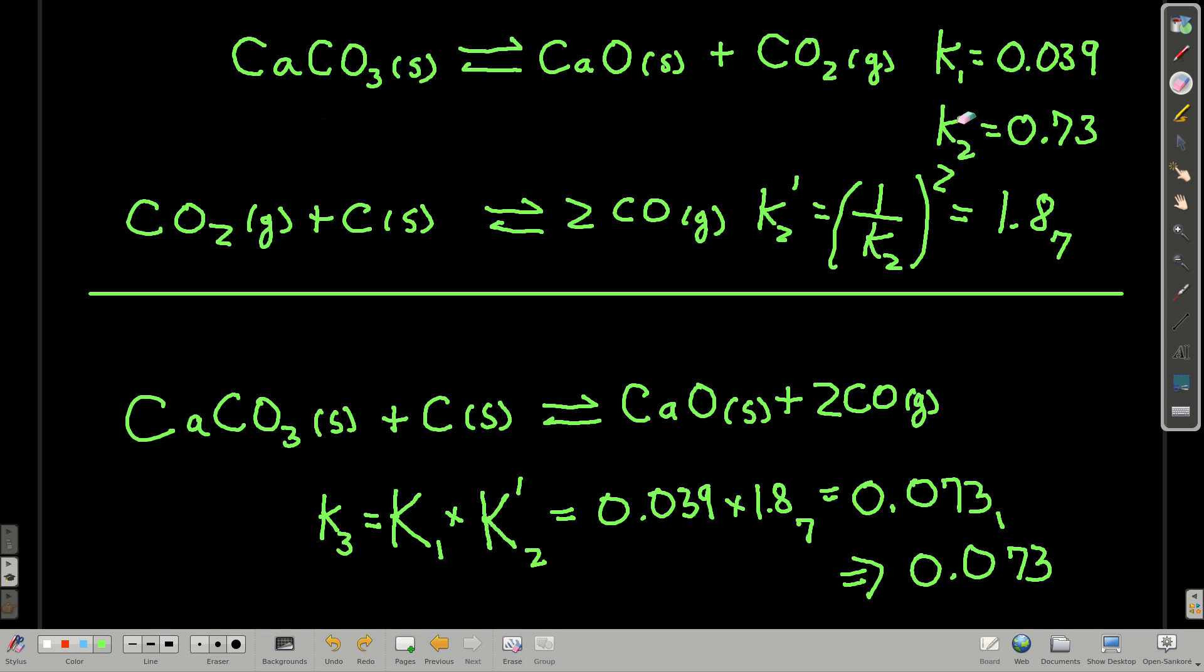And we have this. So when we add these equations, this carbon dioxide and this carbon dioxide cancel. There is no carbon dioxide down here. That's good. We have one calcium carbonate on the left, one carbon solid on the left there, one calcium oxide on the right, two carbon monoxides. So these two equations add up to this. All we have to do now is multiply these two Ks after we manipulated this one here. And we get the K for this reaction, K₁ times K₂ prime. Prime means we inverted it and raised it to the second power. And we get 0.073.